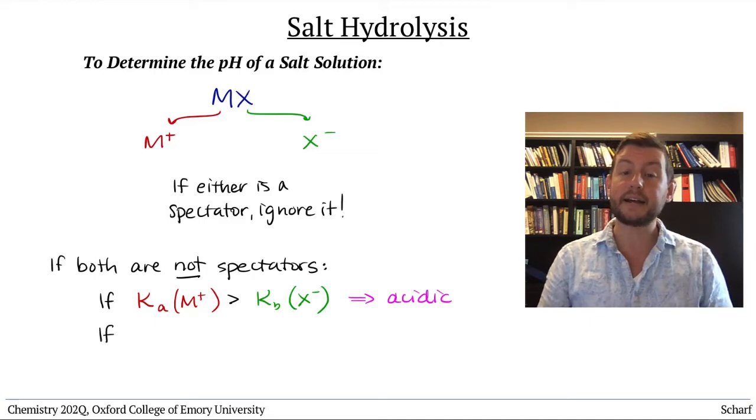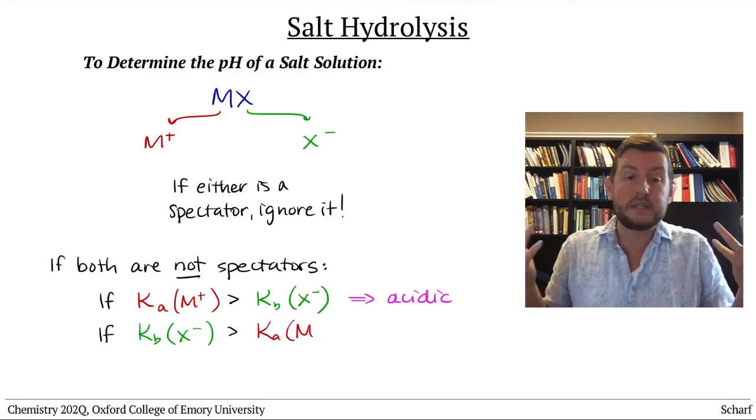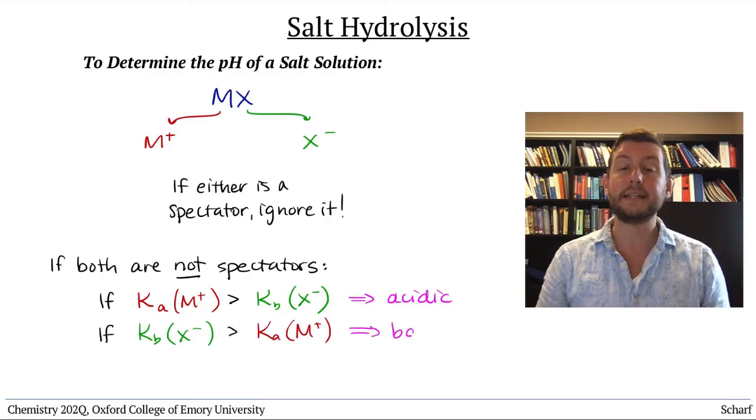If the Ka of the acid is smaller than the Kb of the base, then the base wins out and the solution is slightly basic.